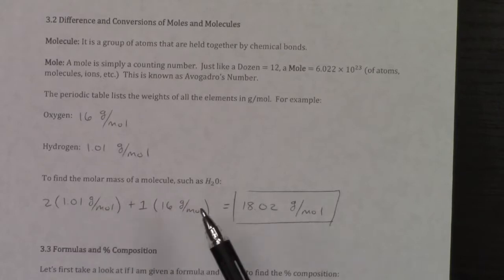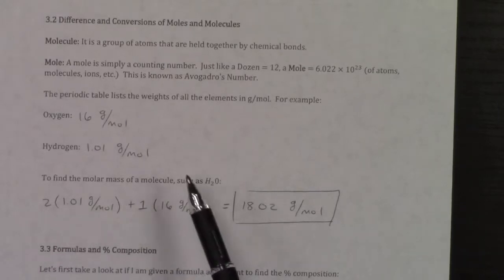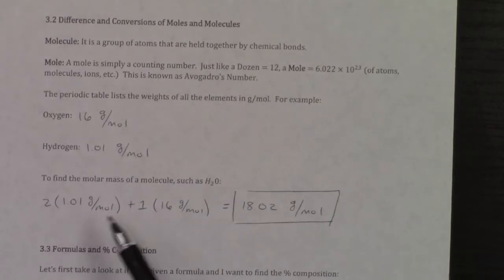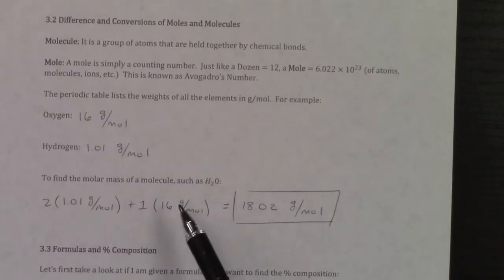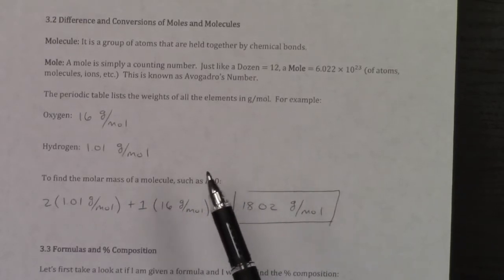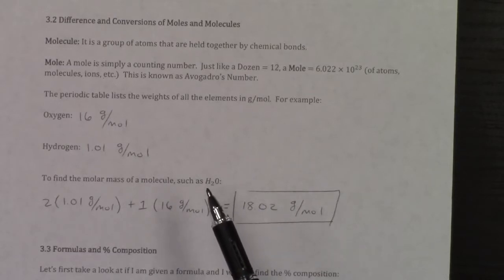And so in order to find the molar mass of a molecule, what you do, say H2O, I have two hydrogens times the 1.01, I have one oxygen times 16 grams, and so that'd be 18.02 grams per mole.